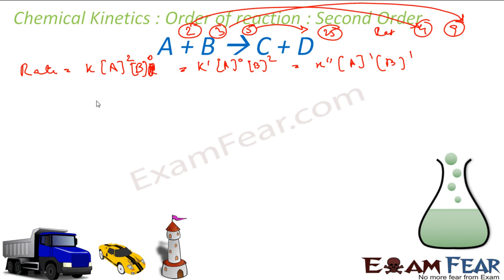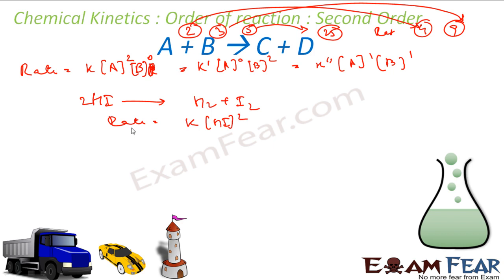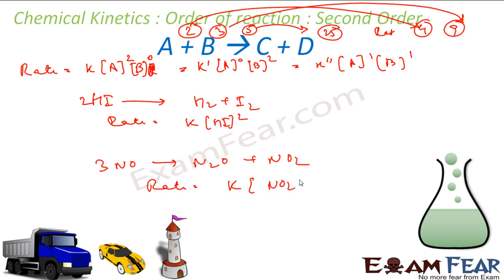An example of a second order reaction is the decomposition of HI without any catalyst — 2HI → H₂ + I₂ — where the rate is second order. Another example is 2NO → N₂O + NO₂, where rate = K[NO]². Note these powers are all experimental values and may or may not match the stoichiometric coefficients of the balanced equation.